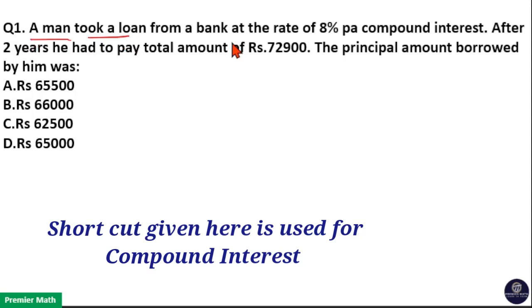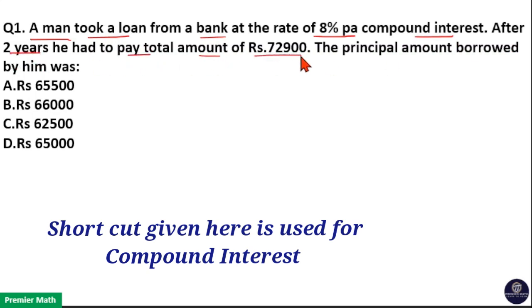A man took a loan from a bank at the rate of 8% per annum compound interest. After 2 years, he had to pay a total amount of Rs. 72,900. The principal amount borrowed by him was?